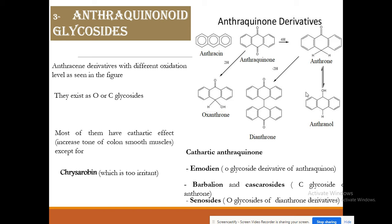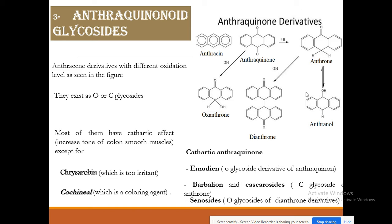All of these have cathartic effects except chrysarobin, which has an irritant effect rather than a cathartic one. We also have cochineal, which is a coloring agent — the carmine pigment — and this is used as a coloring agent.